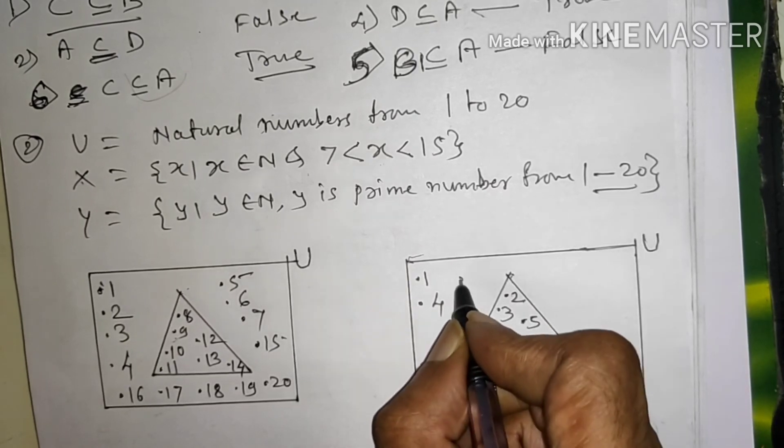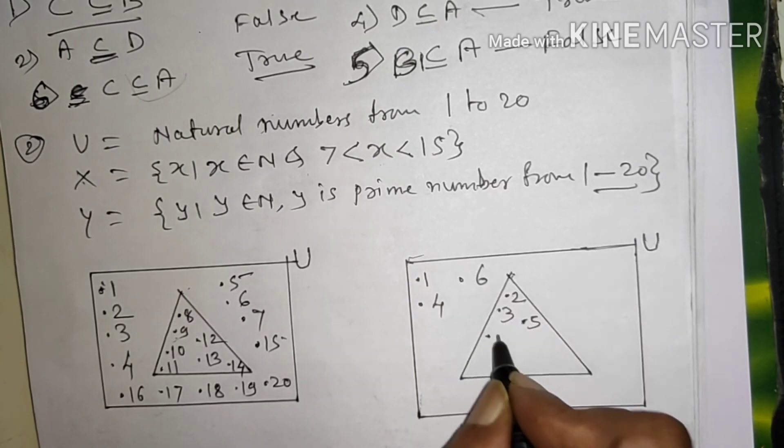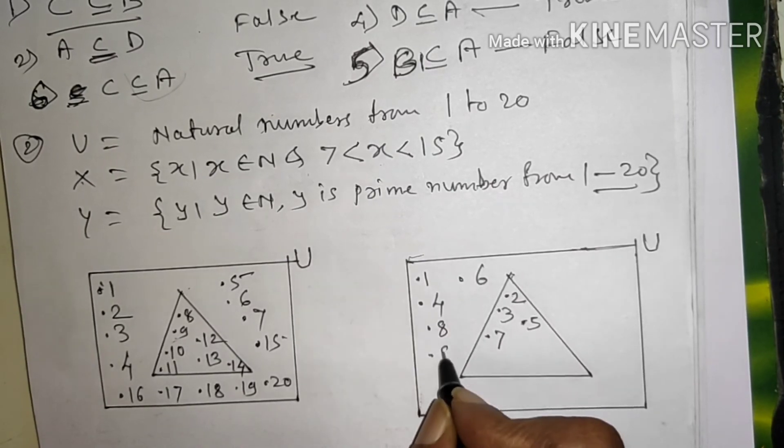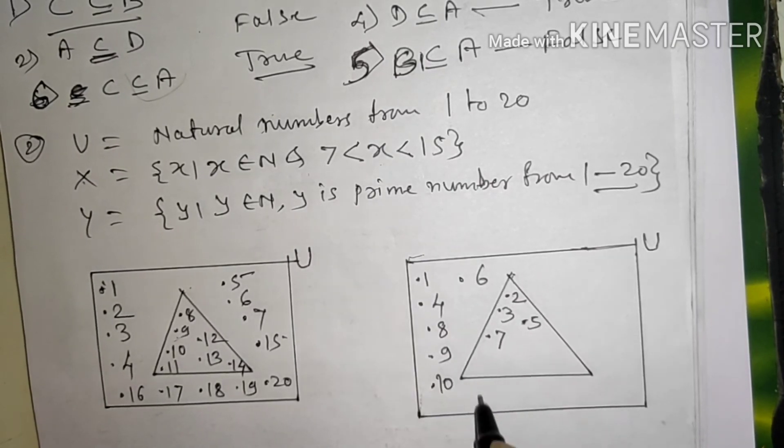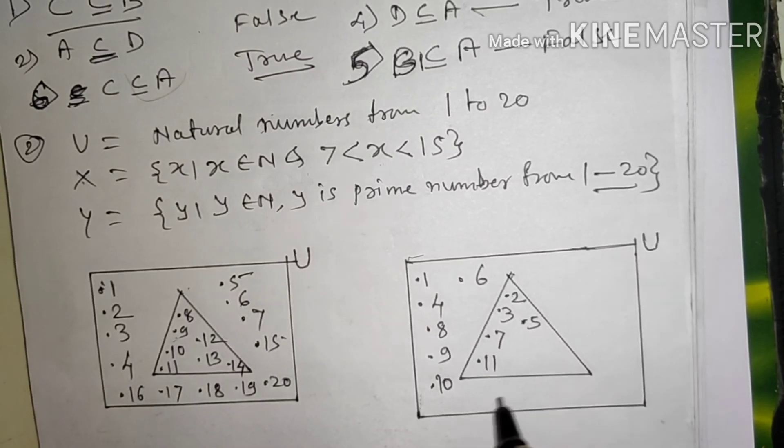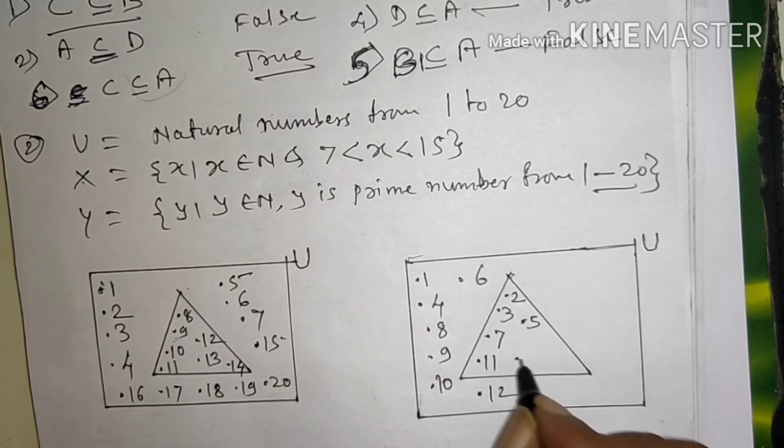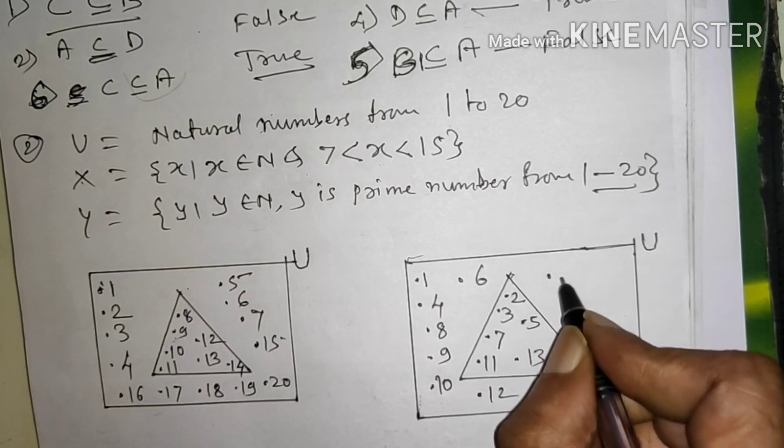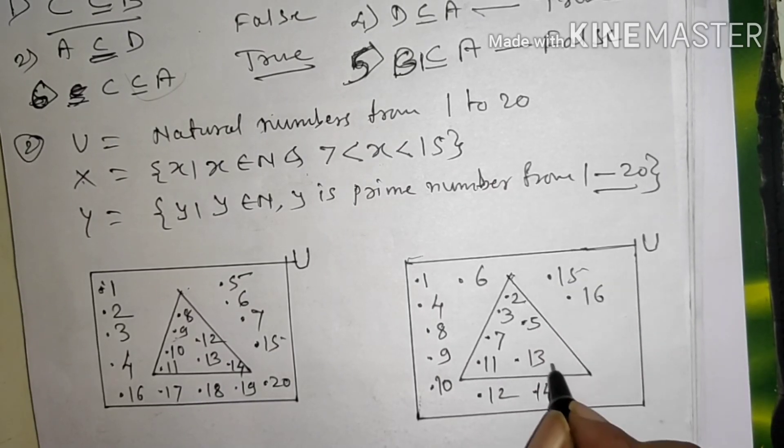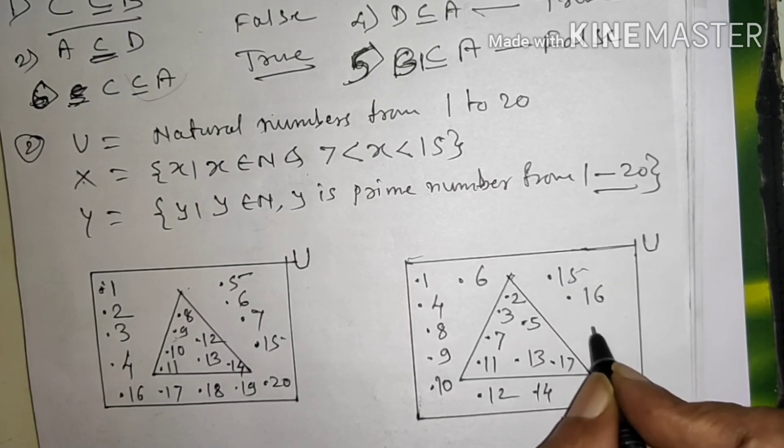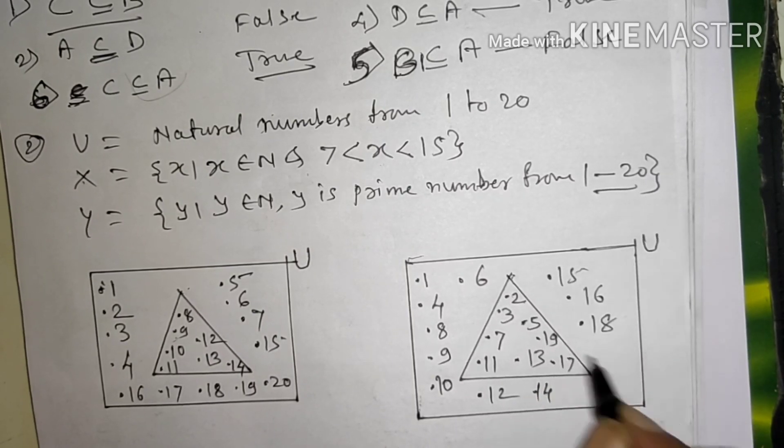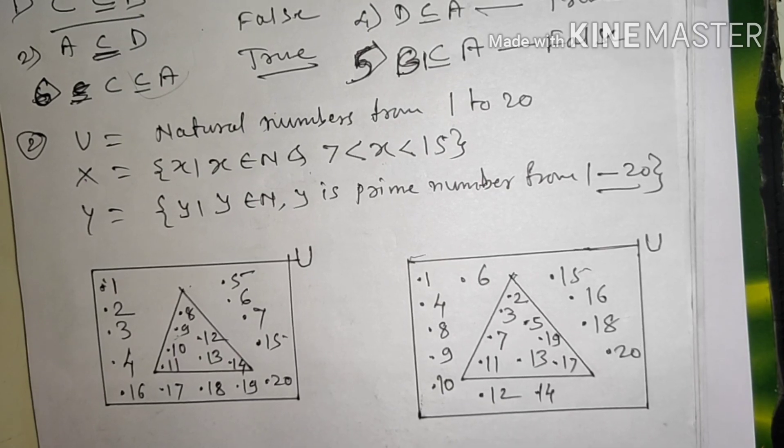6 nahi hai, 7 prime number hai, 8 prime nahi hai, 9 prime nahi hai, 10 prime nahi hai, 11 prime hai, 12, 13 prime hai, 14 nahi hai, 15 prime nahi hai, 16 prime nahi hai. This is 17, 18, 19 prime, 20. So these are here and here.